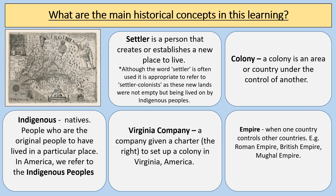A colony is an area or country under the control of another — so Jamestown became a colony of Britain. Indigenous means natives, people who are the original people to have lived in a particular place. In America, we refer to indigenous peoples; they have sometimes been called Native Americans, but it's more appropriate to say indigenous peoples. The Virginia Company was a company given a charter — the right to set up a colony in Virginia. The name Virginia comes from Elizabeth I, known as the Virgin Queen because she never married. An empire is when one country controls other countries, such as the Roman Empire, the British Empire, or the Mughal Empire.